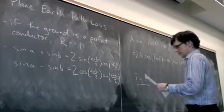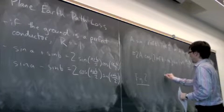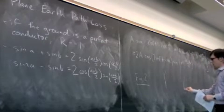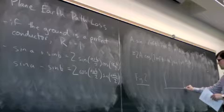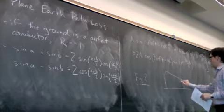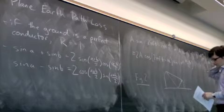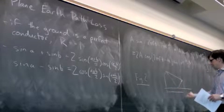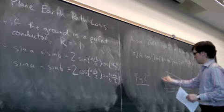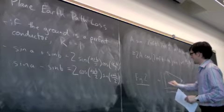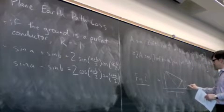Figure 2: Antenna, antenna, direct path, bounce path. This distance is d. This height is hₜ. This height is hᵣ.